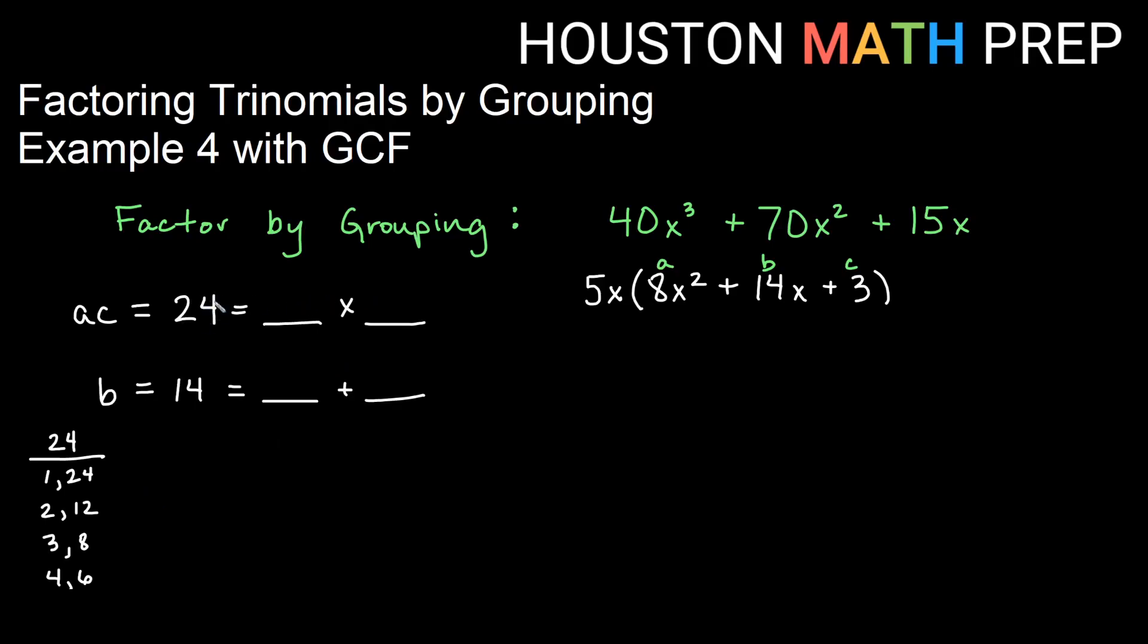Now I notice that I multiply to get a positive. So these numbers are the same sign. And if I'm adding to also get a positive, then they must both be positive. So I look down this list and say, can I add any of these and get 14? The answer is yes. 2 plus 12 will give me 14. So 2 times 12 and 2 plus 12 is what we've been looking for.